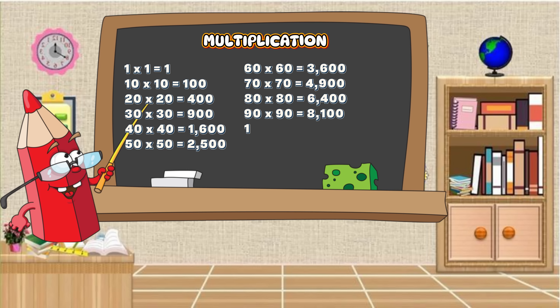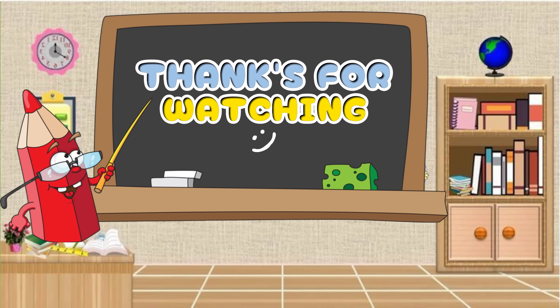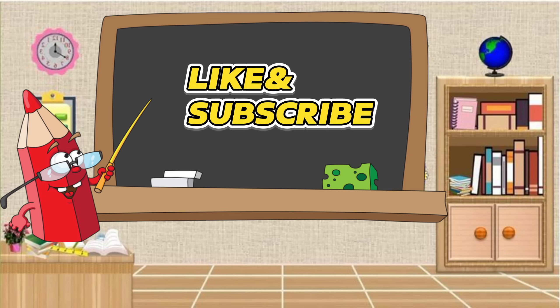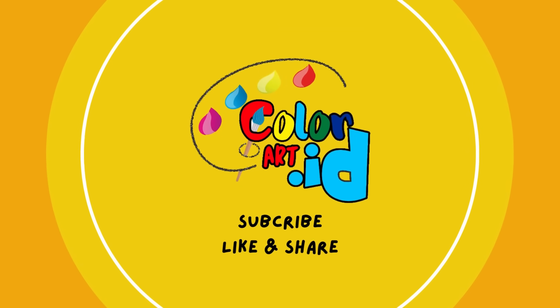100 multiplied by 100 is equals to 10,000. 1,000 multiplied by 1,000 is equals to 1,000,000.